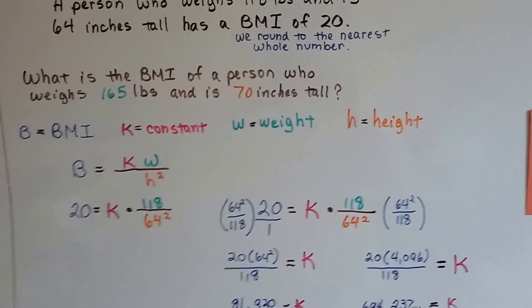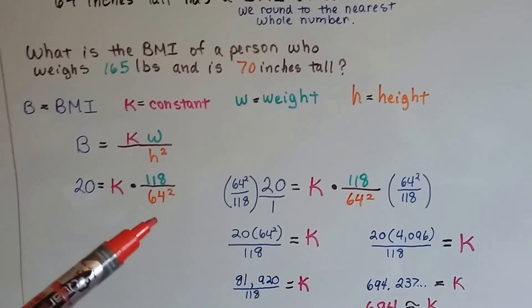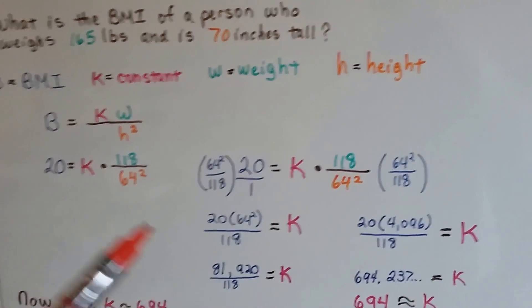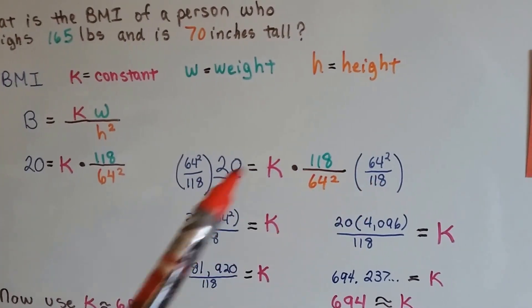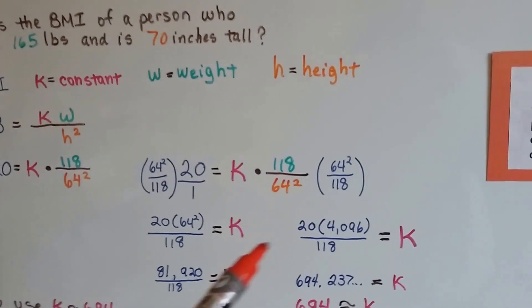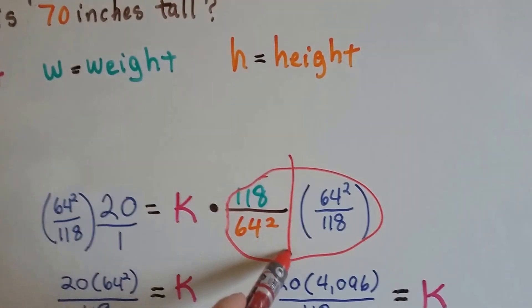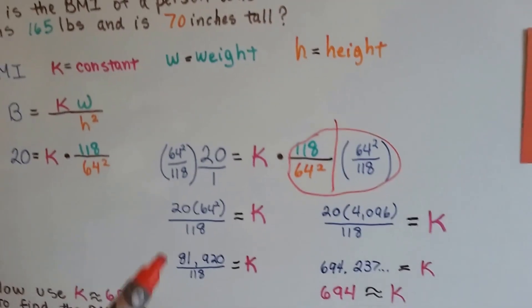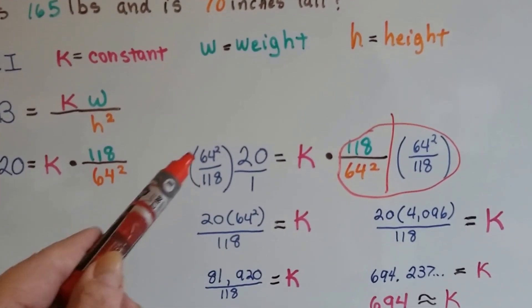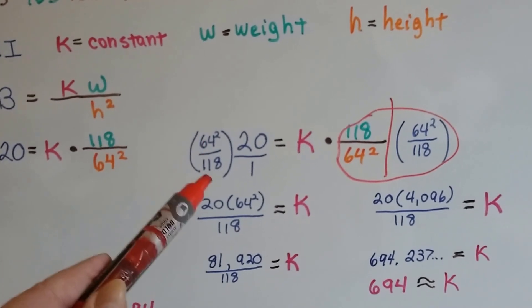You're probably going to use a calculator because this gets pretty big with the values. We can multiply both sides of the equation by the inverse of this one, and that will make this entire thing equal a 1. We end up with just K is equal to this math. That's 20 times 64 squared over 118.